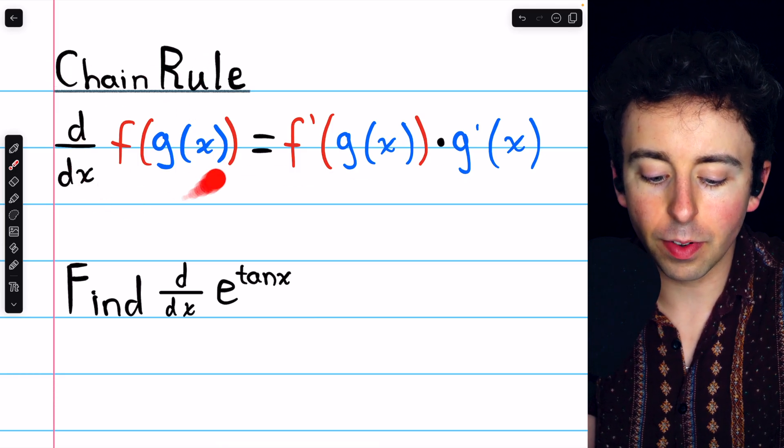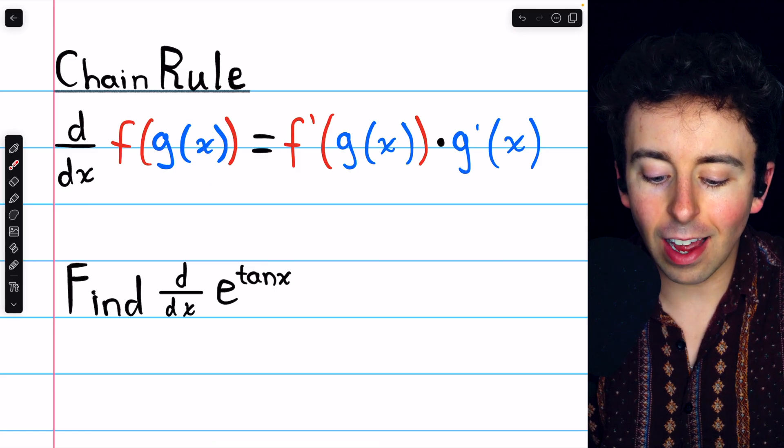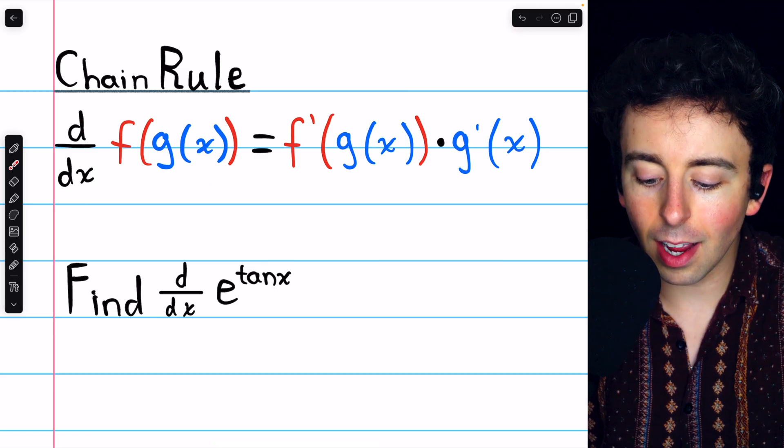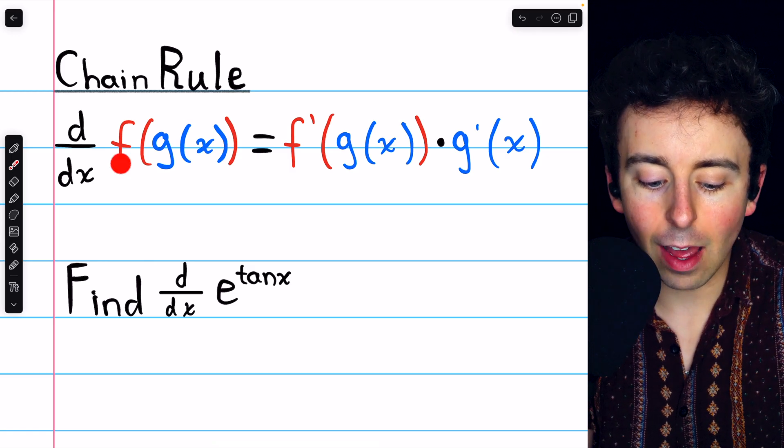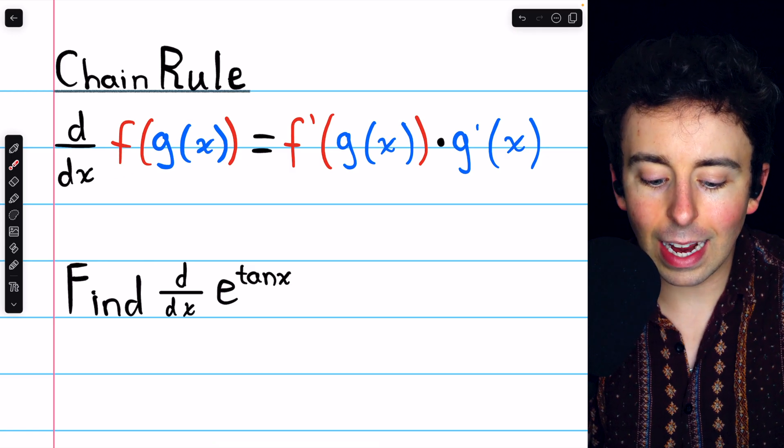The derivative of f of g is f prime of g times g prime, so we need to identify our f, the outside function,